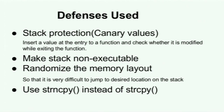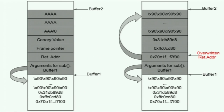The third defense is to randomize the memory layout — ASLR. When each time the program executes, the stack is loaded to a different location. The base address of the stack starts at a different location every time. In this demonstration I used a hard-coded address. If every time the stack is loaded to a different location, the attack will not work. This defense is referred to as ASLR — Address Space Layout Randomization.